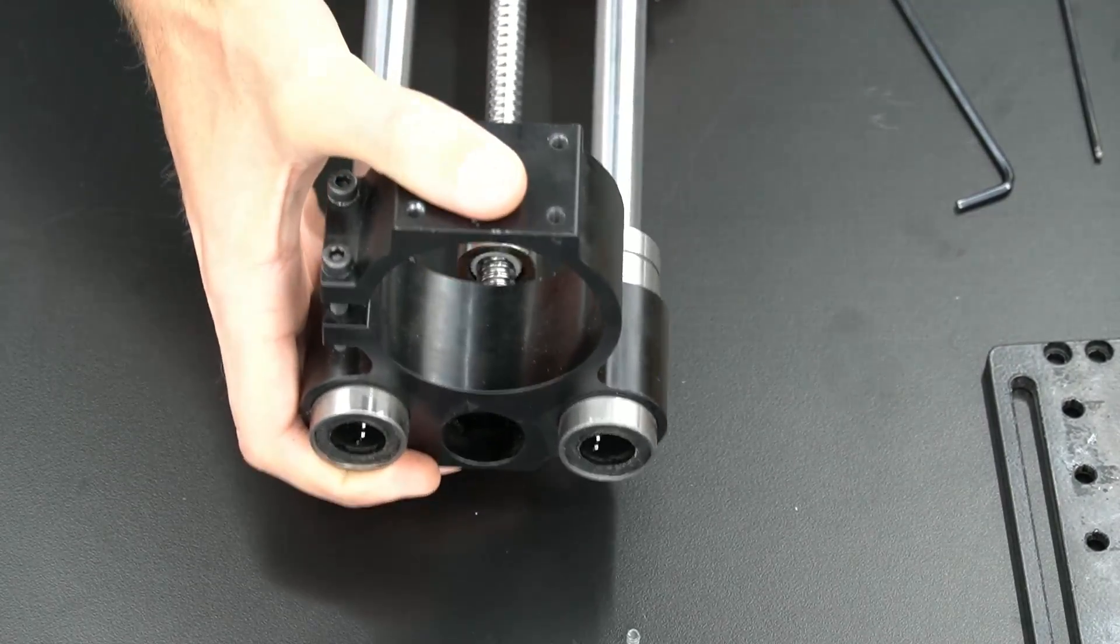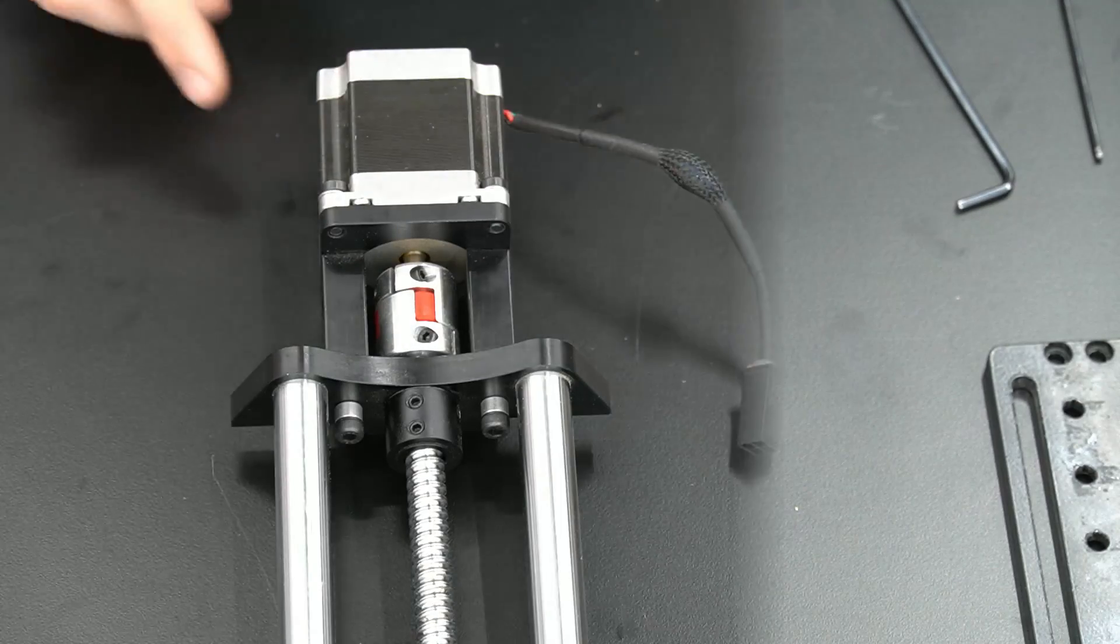With these bolts removed, we can now slide the spindle mount off of the Z slider.